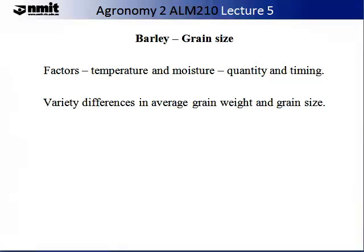For example, the grain filling period of barley in Western Australia can be associated with dry springs and brief hot spells. The amount and timing of moisture supply during grain filling and high temperatures after flowering can affect the grain size. Variety also shows an effect as there is quite a range of average grain size depending on the variety, with up to a 2 mg fresh weight difference between some grain varieties.